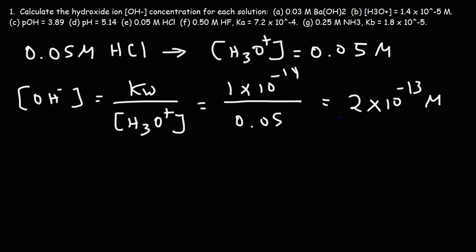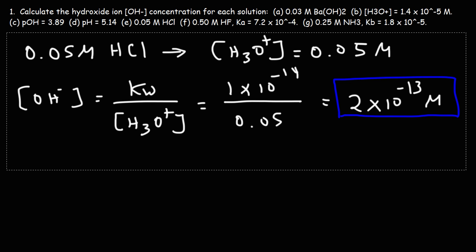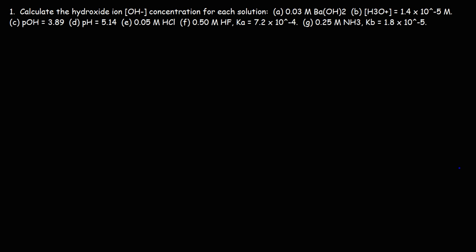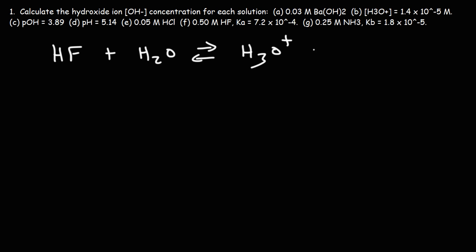So that's the hydroxide concentration for part E. Now let's move on to part F. HCl is a strong acid, but HF is a weak acid, and we're given the acid dissociation constant — so this is going to require a little more work. First let's write the dissociation reaction between hydrofluoric acid and water. Because it's a weak acid, it's going to ionize partially.